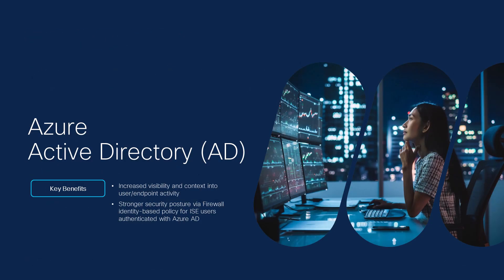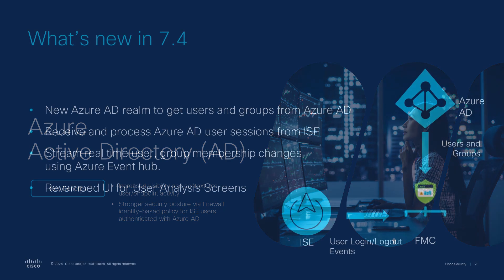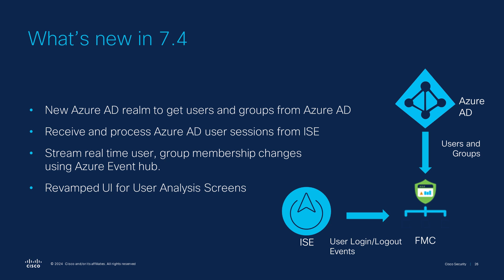Finishing us up, we have Azure Active Directory user identity with Identity Services Engine, ISE. Azure AD is a cloud-based identity and access management service that enables employees to access external resources such as Microsoft 365 and thousands of other SaaS applications. By integrating Cisco Secure Firewall with Azure AD and ISE, users can receive Azure Active Directory logins from ISE, enforce access policy based on Azure AD users and groups, stream real-time user or group membership changes using the Azure Event Hub, and see the newly refreshed user interface for user analysis.